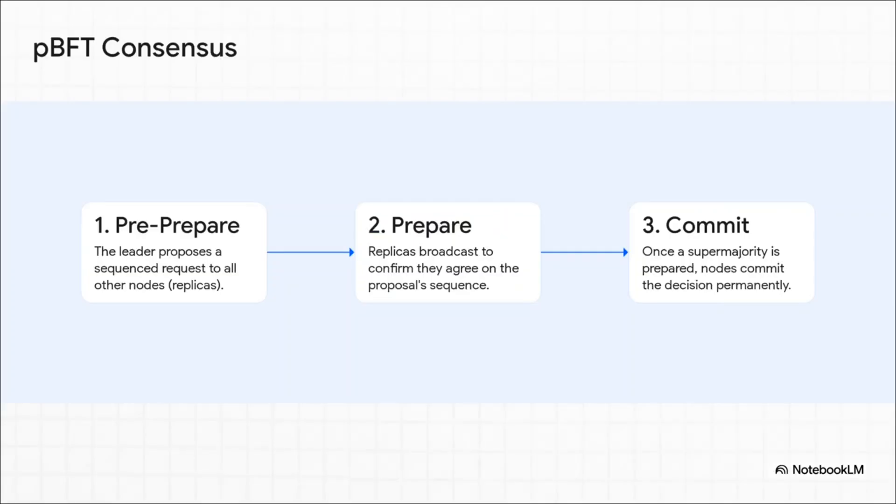So how does it actually work? Think of it like a really high-stakes board meeting. First, you have the pre-prepare phase. The leader, kind of like the CEO, proposes an action. Then comes the prepare phase, where all the board members talk amongst themselves to confirm that they all received the exact same proposal. No funny business. Finally, once a supermajority of them agree, they all move to the commit phase, where they cast a final, binding vote that locks that decision in for good.